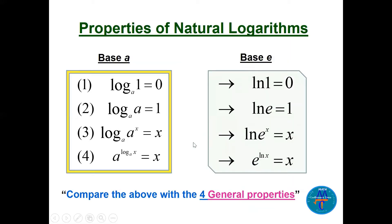The same properties apply to the natural logarithm, which uses base e. When the base is e, we write ln instead of log base e. So: ln of 1 equals 0, ln of e equals 1, ln of e to the power x equals x (property 3), and e to the power ln of x equals x (property 4). Understanding the four general properties for base a lets you apply them to natural logarithm, common logarithm, or any other valid base.